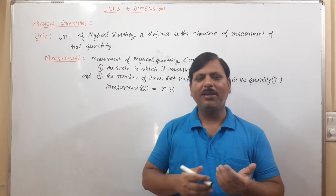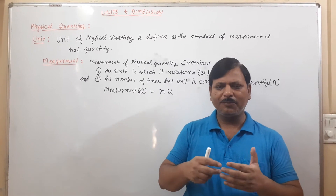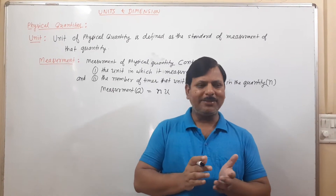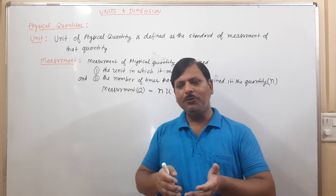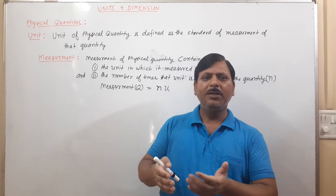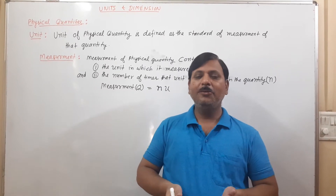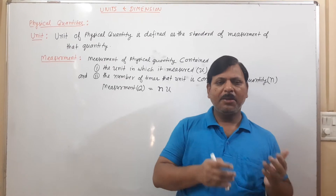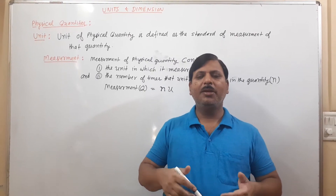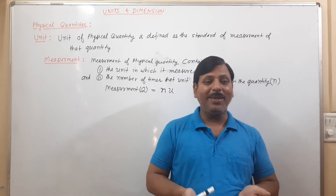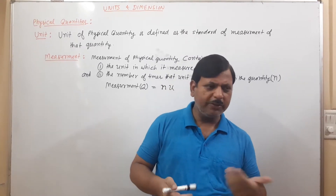The first question arising is: what is a physical quantity? Physical quantities are those quantities which can be measured and which can be used in terms of the laws of physics. For example, mass, time, force, and pressure are physical quantities.